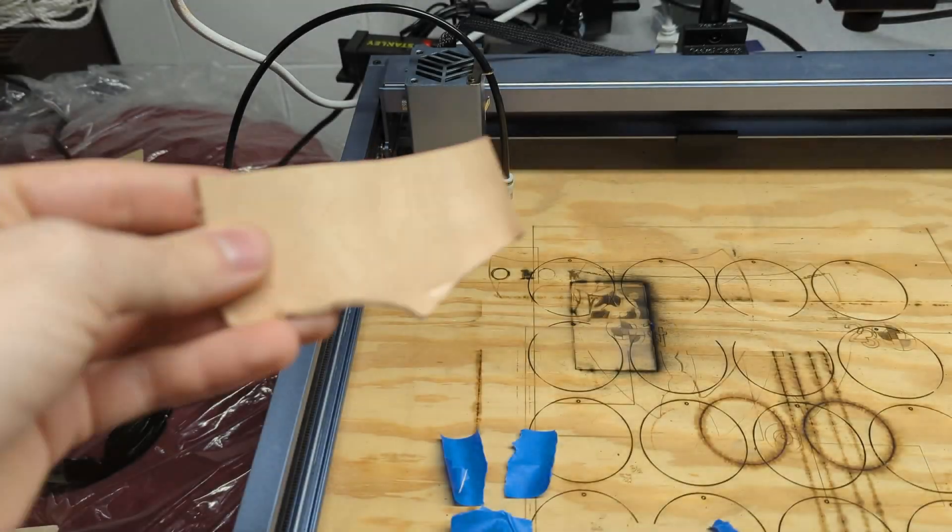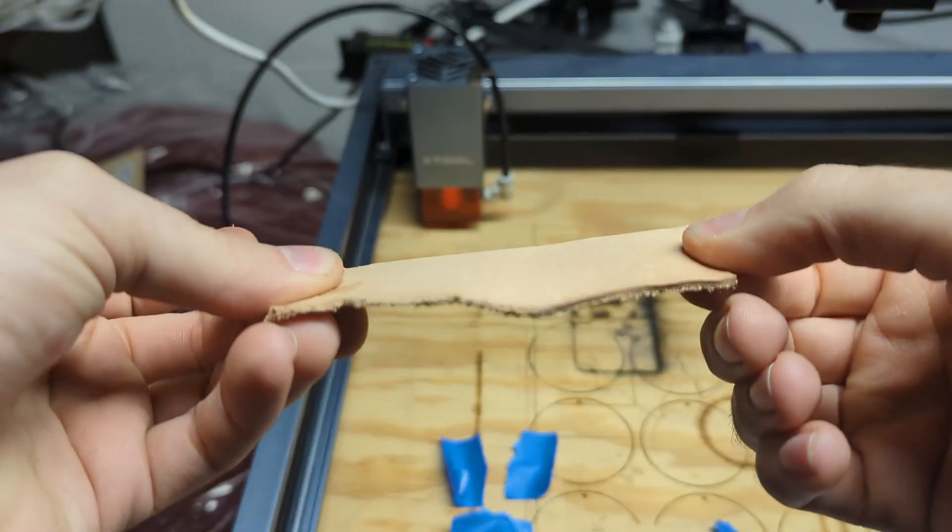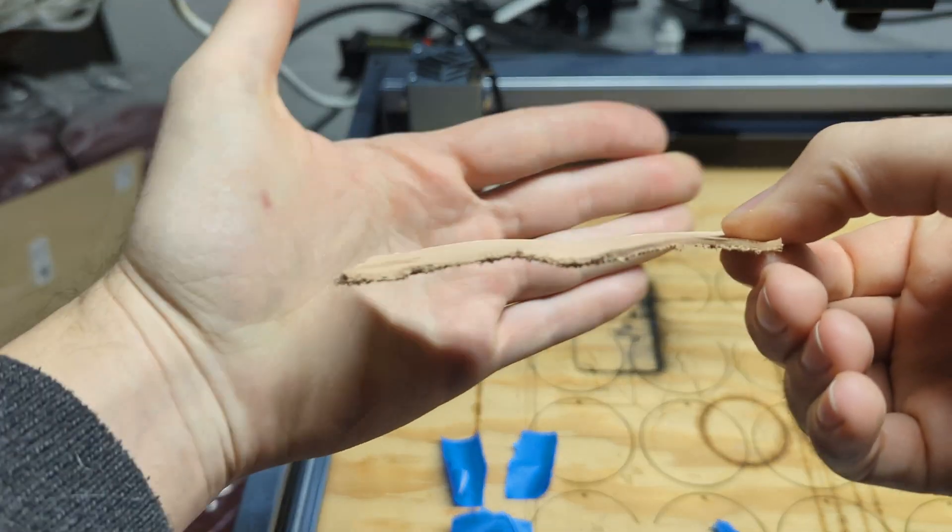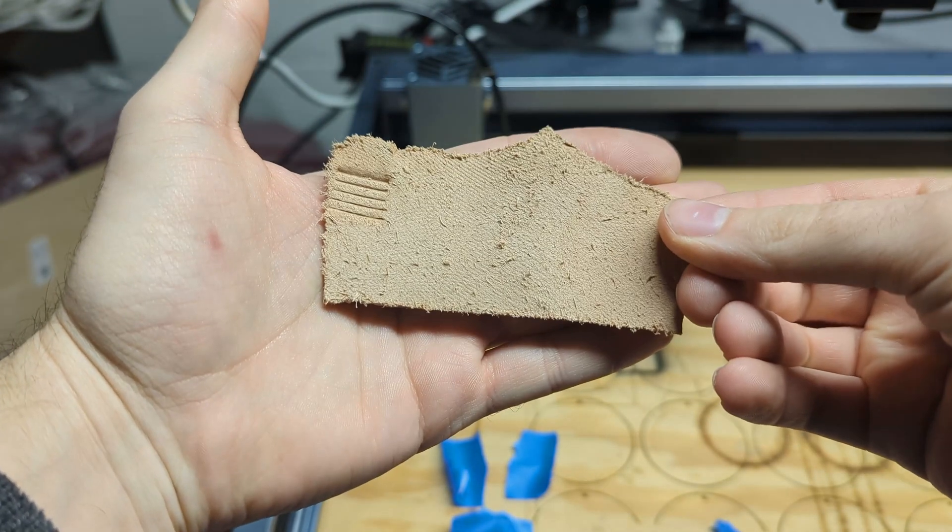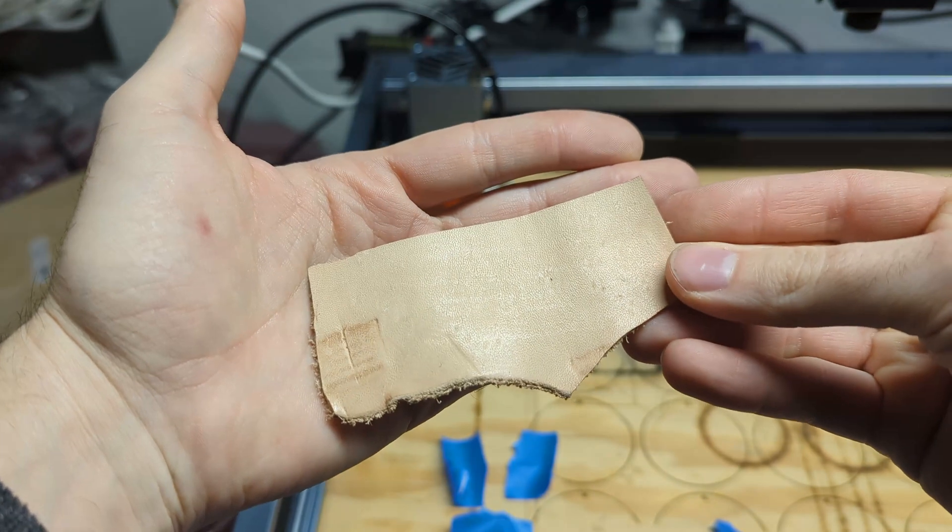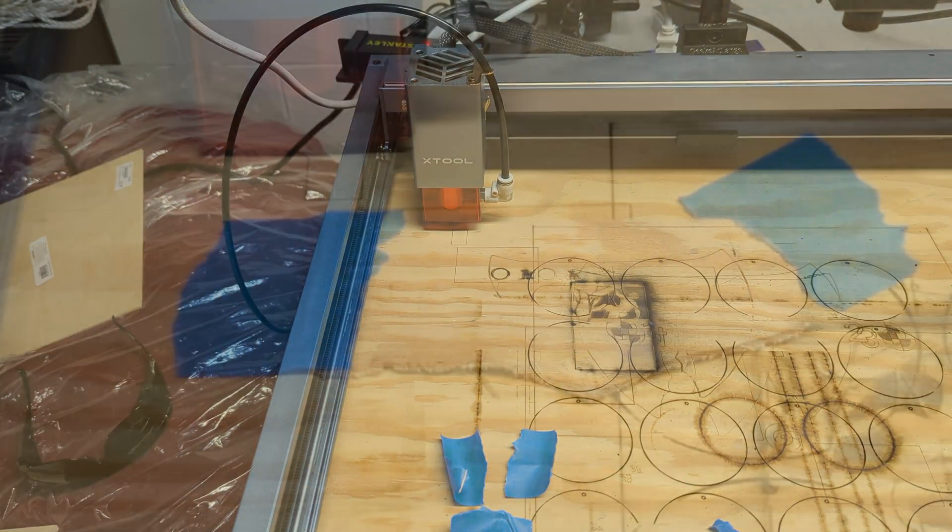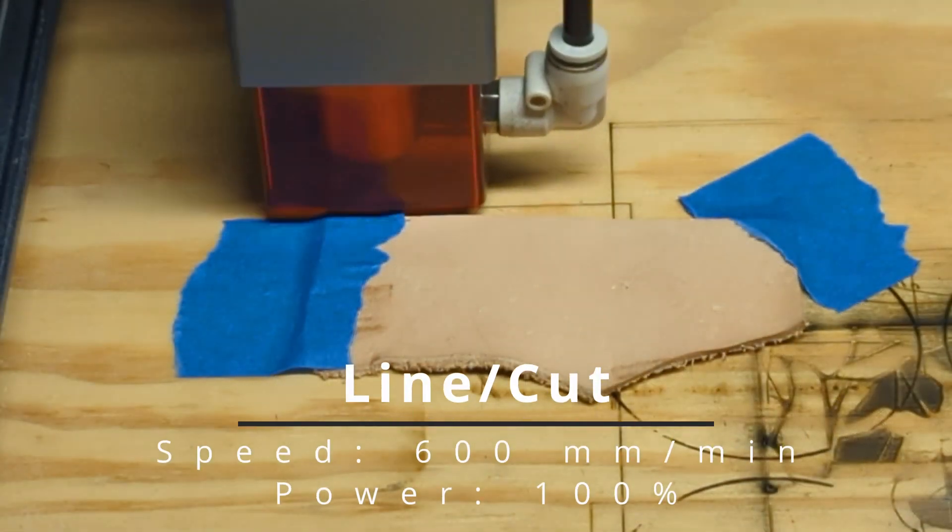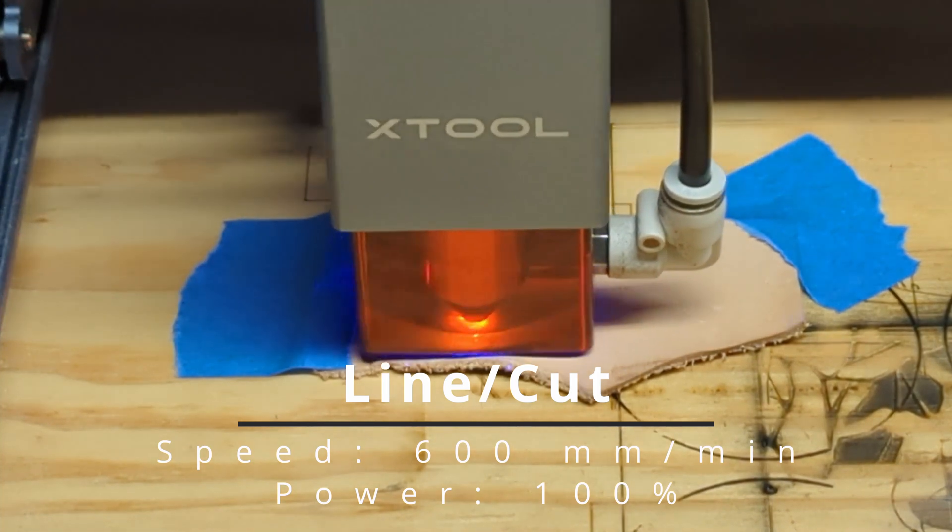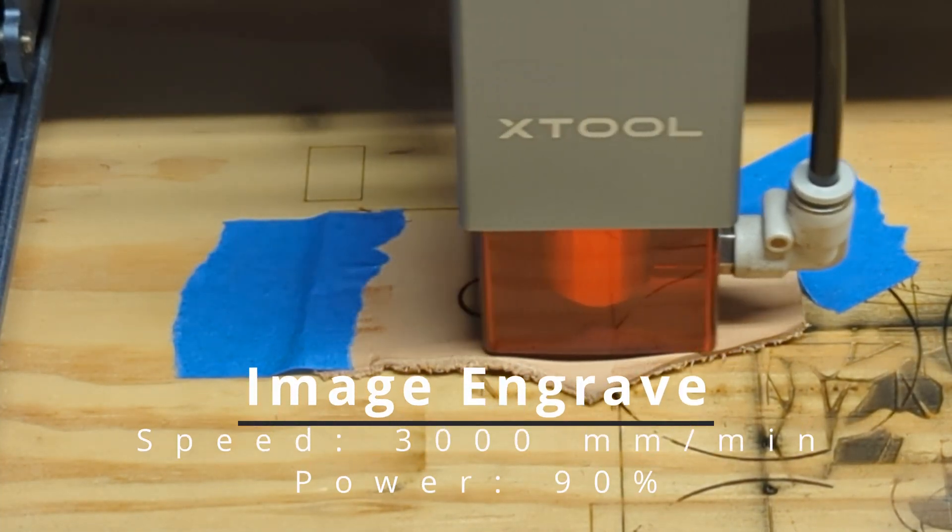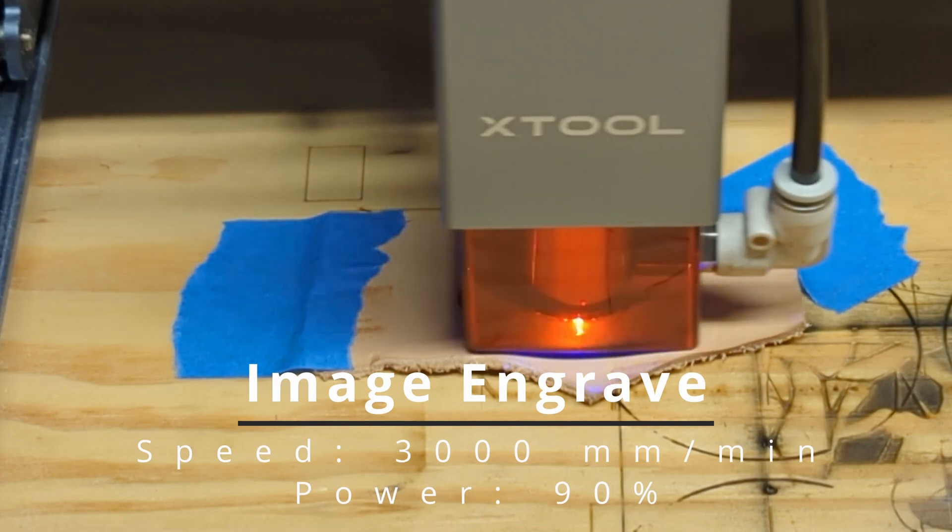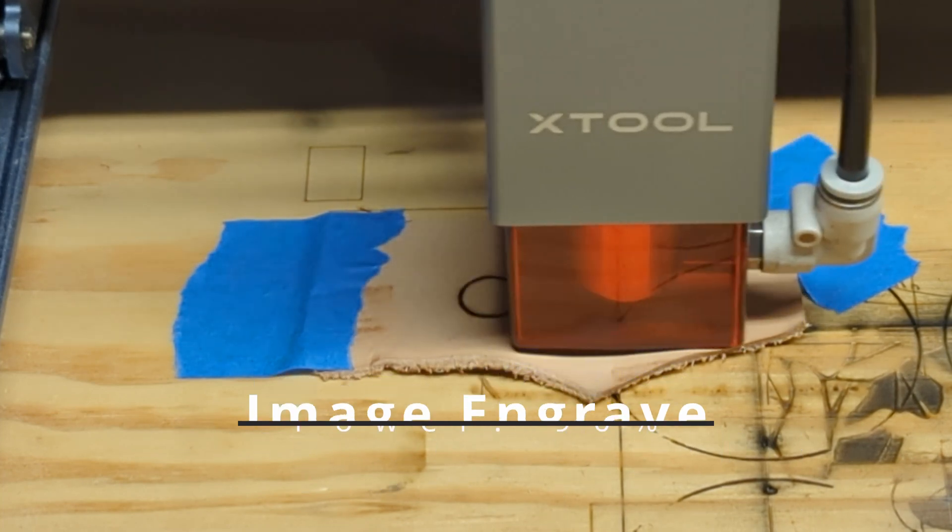But we're going to try some veg tan leather next. This is a three to four ounce veg tan leather. It's probably, I don't know, three millimeters thick, two and a half, three millimeters thick. I've cut this before and it performs quite well, but it smells like dying animals, so a well ventilated room is pretty much a necessity.